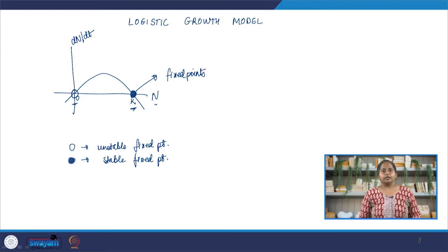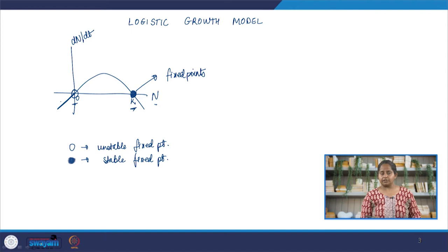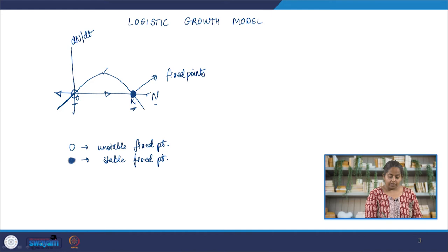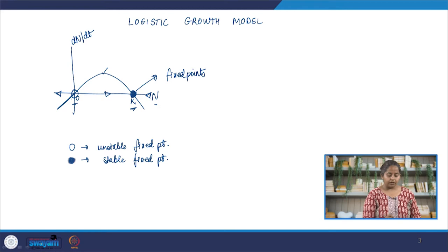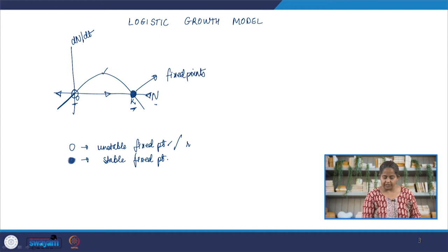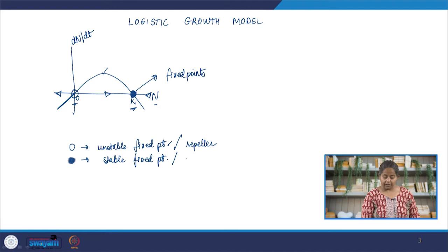Remember: whenever dn/dt is negative, the flow is towards minus infinity; whenever dn/dt is positive, the flow is towards positive infinity. By looking at the direction of arrows, we get an idea of how a perturbation will move around fixed points. At n = 0, the arrows move away from the fixed point — it is an unstable fixed point, also called a repeller. The fixed point k is a stable fixed point, also known as an attractor, because the arrows point toward it.